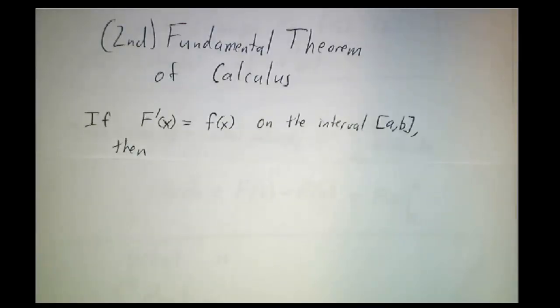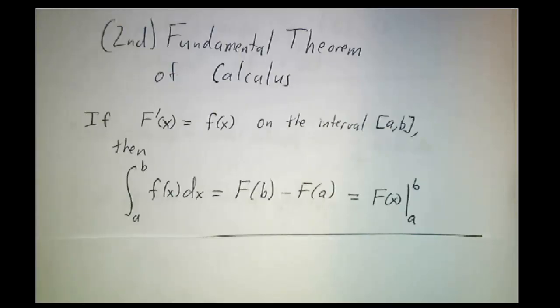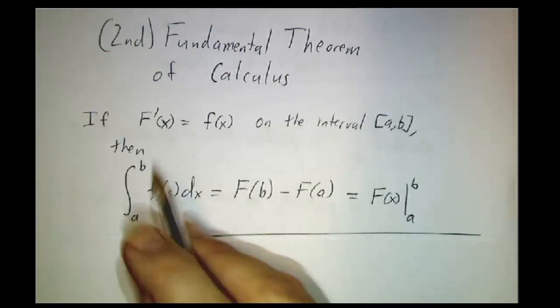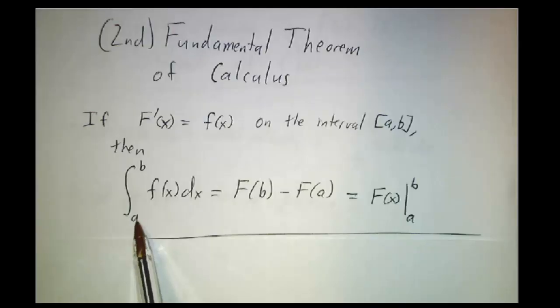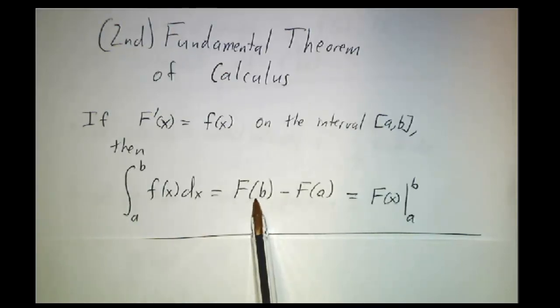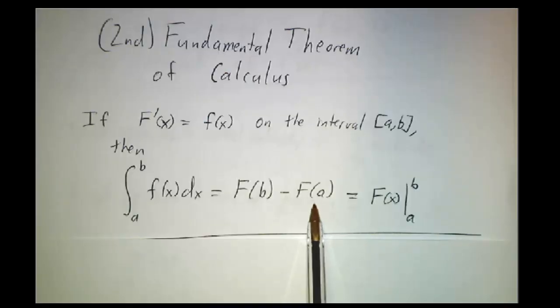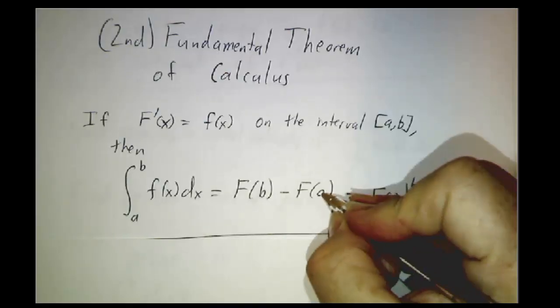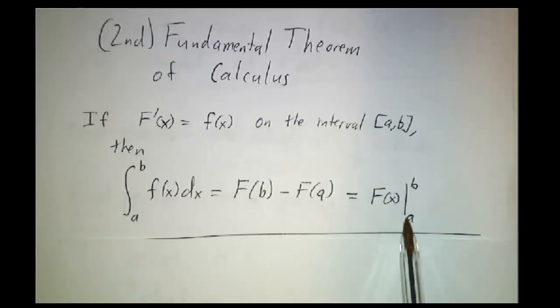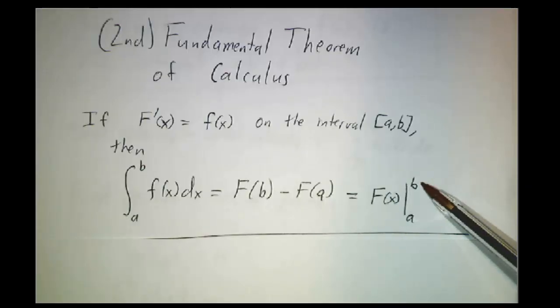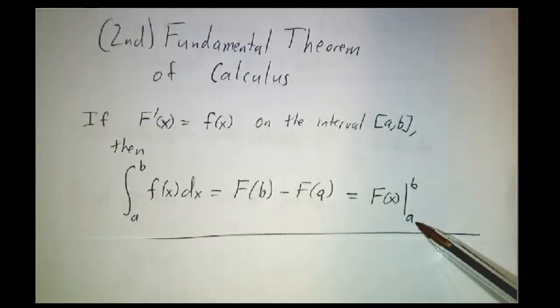Now that we know what indefinite integrals are, let's talk about the net change theorem. We start with the fundamental theorem of calculus, which says that if you've got a function f and a function F that's an antiderivative of f, then the integral of f from a to b is F(b) minus F(a). This is by far the most useful aspect of the fundamental theorem of calculus — we find antiderivatives and plug them in at the endpoints. We use the notation: big F of x with a bar to the right, where the two numbers mean plug in the top value and subtract what you get when you plug in the bottom value.